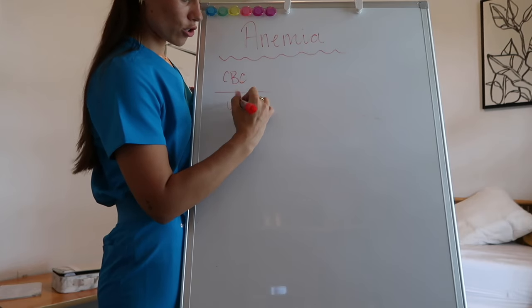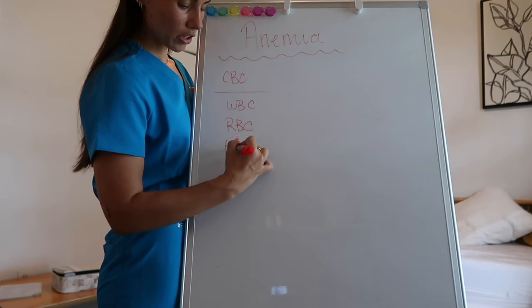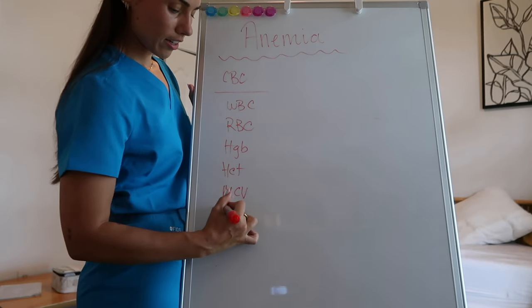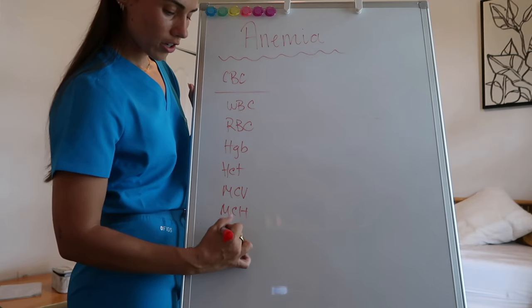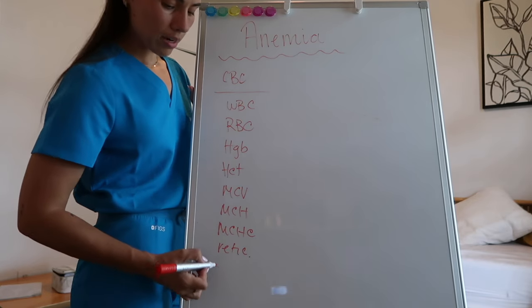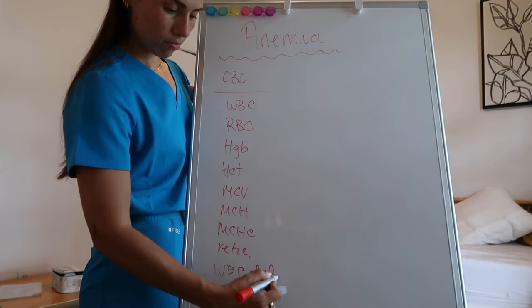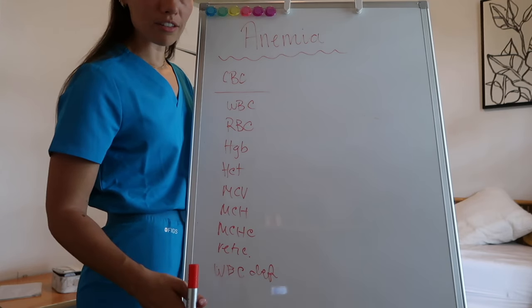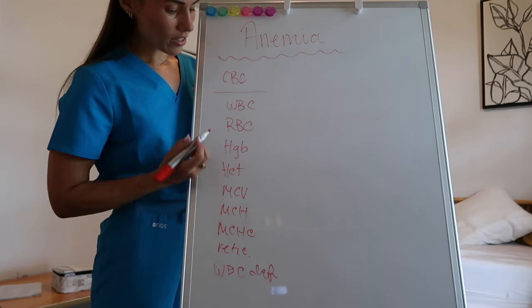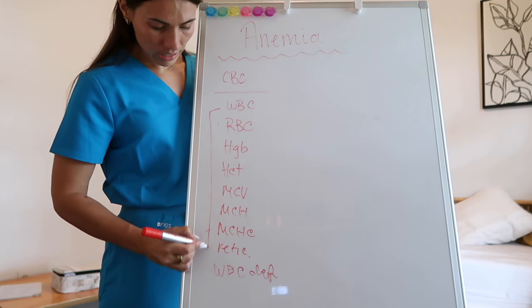The CBC is going to show you your white blood cell count, your red blood cell count, your hemoglobin, your hematocrit, your MCV, your MCH, your MCHC, your reticulocyte count, and then a bunch of your white blood cell differentials — meaning like your absolute neutrophils, eosinophils, lymphocytes, all that type of stuff. When we're talking about anemias, we're really going to focus right here.